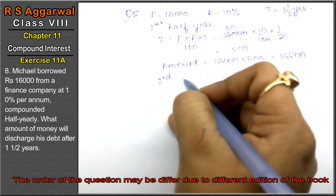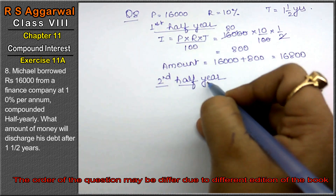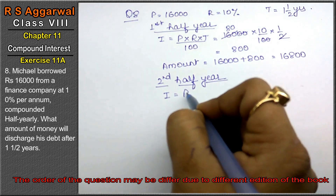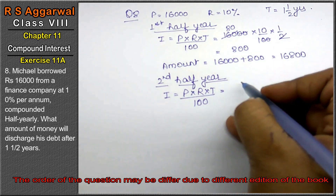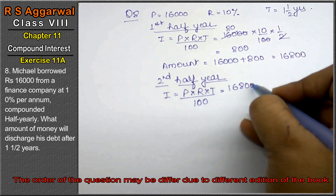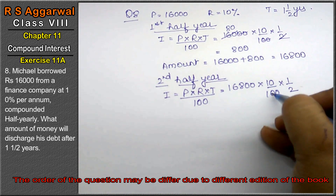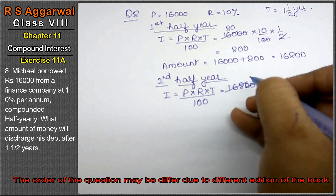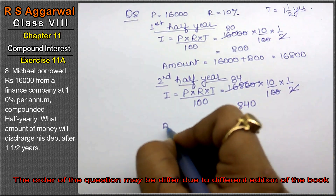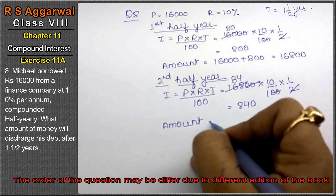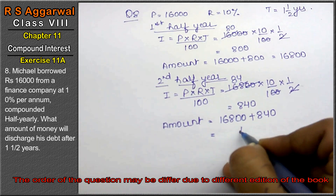Second half year: P is now 16,800, R is 10%, T is half year. After cancellation, interest is 840. Amount equals 16,800 plus 840, giving 17,640.